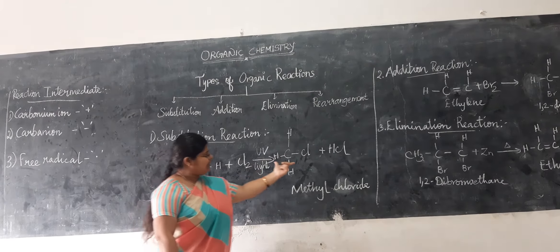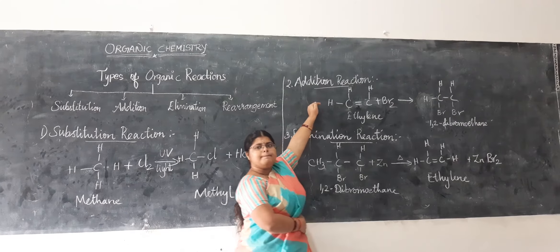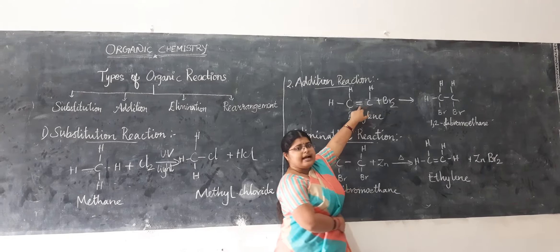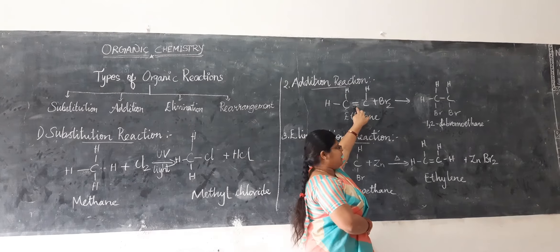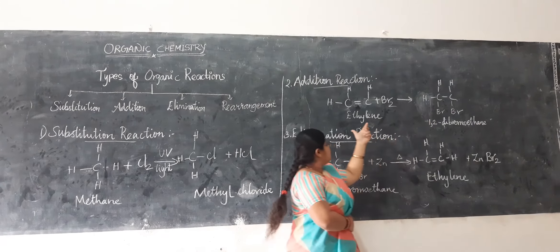Next, we are going to see the addition reaction. In an addition reaction, the substrate contains a double bond or triple bond. That multiple bond breaks — the pi bond breaks — and forms a new sigma bond. For example, ethylene reacts to form 1,2-dibromoethane.